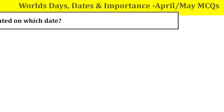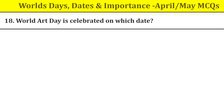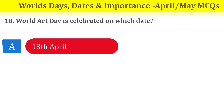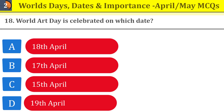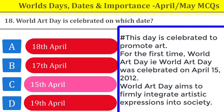Question number eighteen: World Art Day is celebrated on which date? It is on 15th April. This day is celebrated to promote art. World Art Day was first celebrated on 15th April 2012. World Art Day aims to firmly integrate artistic expression into society. Dear students, go through the questionnaire — quality questions are there.